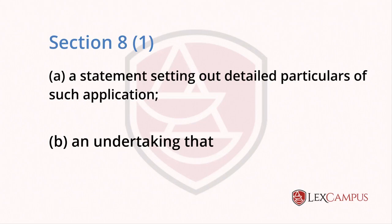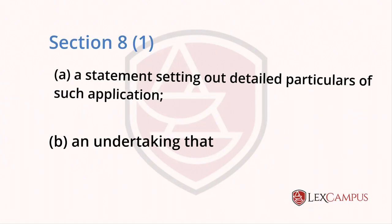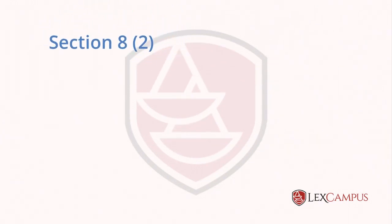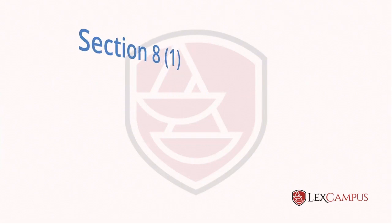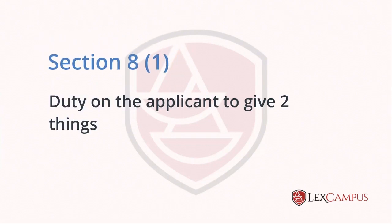What information does the applicant have to give? With regard to novelty, patentability, and claims — all that information. Section 8.2 gives the power to the controller to ask for information. So 8.1 is the duty on the applicant to give two things: one, a statement saying whether he has filed an application in a foreign country or not, and if he has filed it, he has to give the details found in Form 3. Section 8.1 is a continuing undertaking — as prosecution continues, you have to keep the patent office informed.